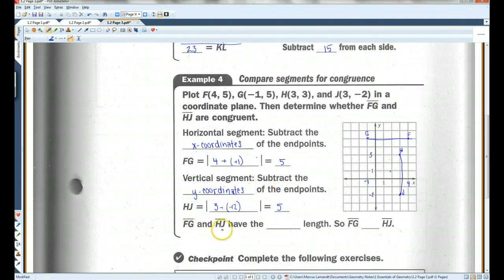So they're both 5 units long. So FG and HJ have the same length. And if you remember, segments that have the same length are congruent. And this little symbol means congruent.